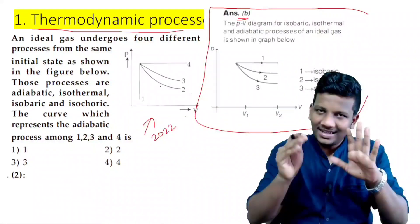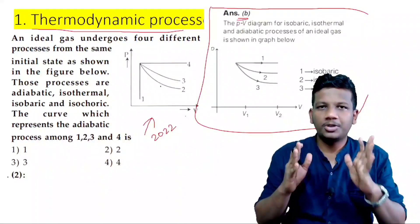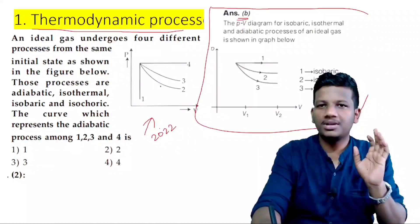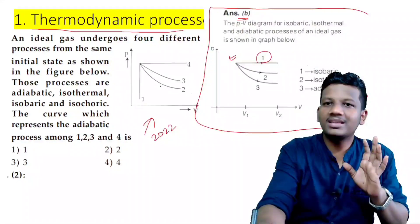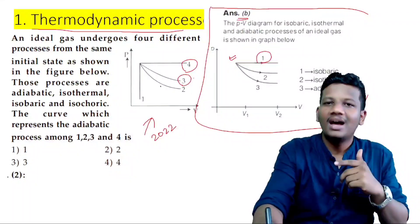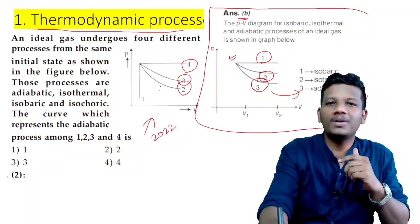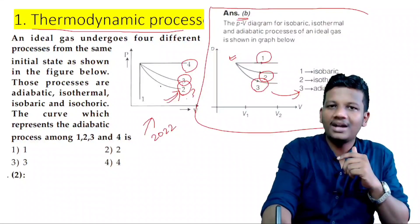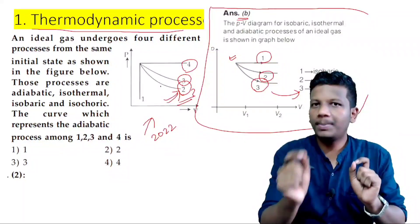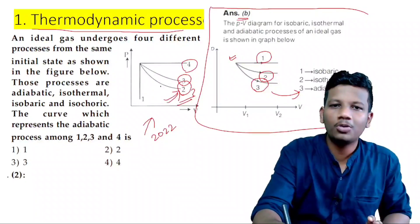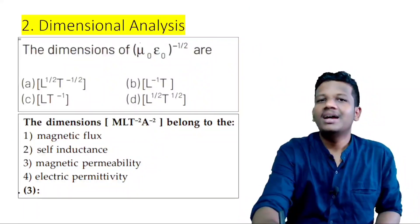I will test this thermodynamic processes diagram. You have to test this question. In this graph, number 1 is isobaric, number 4 is isobaric, number 3 is isothermal, number 2 is adiabatic. Note the answer — if you have to compare, the steeper curve is adiabatic. That is why the answer is number 2. The second question is Dimensional Analysis.